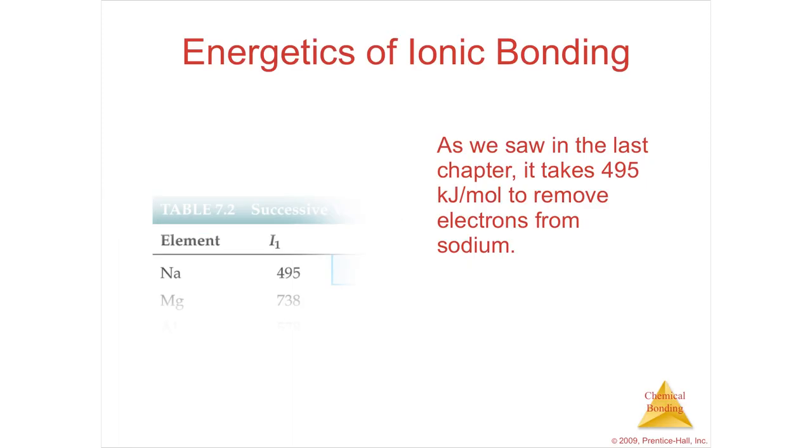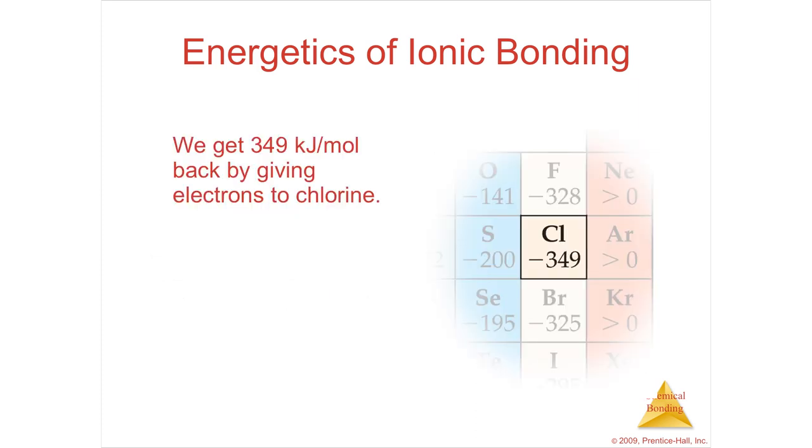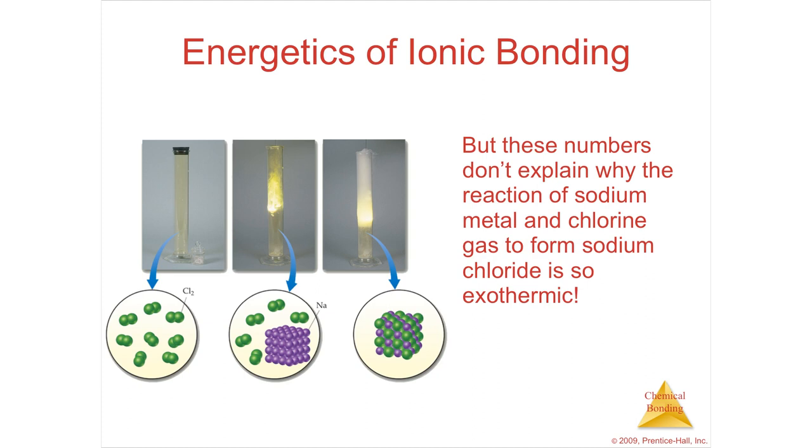So, why is it exothermic? Why is there tons of energy released when you make salt? Because if you look, it shouldn't happen. You've got 495 kilojoules per mole of input energy just to rip off that electron on the sodium. So it costs 495 kilojoules for every mole of sodium that you rip off. And you get back 349 kilojoules per mole for every mole of chlorine atoms that steals. So you get a refund of 349, but it costs almost 500 kilojoules to rip off one sodium. So you shouldn't be able to get tons of energy back. It should actually take a little bit of energy to make salt, but it doesn't.